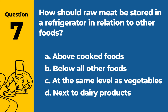Question 7. How should raw meat be stored in a refrigerator in relation to other foods? a. Above cooked foods. b. Below all other foods. c. At the same level as vegetables. d. Next to dairy products. Answer: b. Below all other foods. Raw meat should be stored below all other foods to prevent cross-contamination.